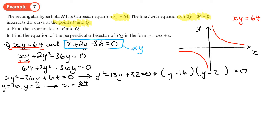So what does that mean? When y is 16, that will give us x equals 64 over 16, which is 4. And then when y is 2, x will be equal to 64 over 2, which is 32. So we have the coordinates of P and Q.